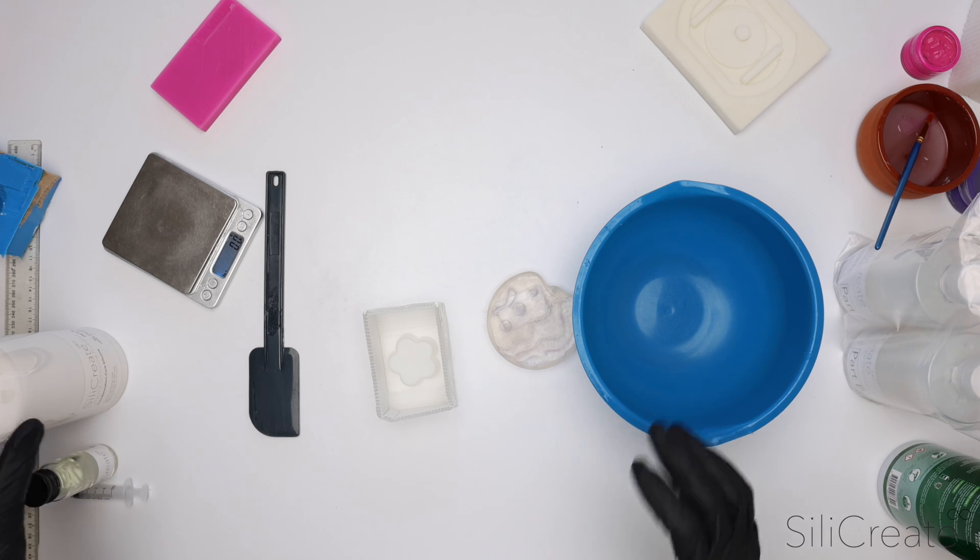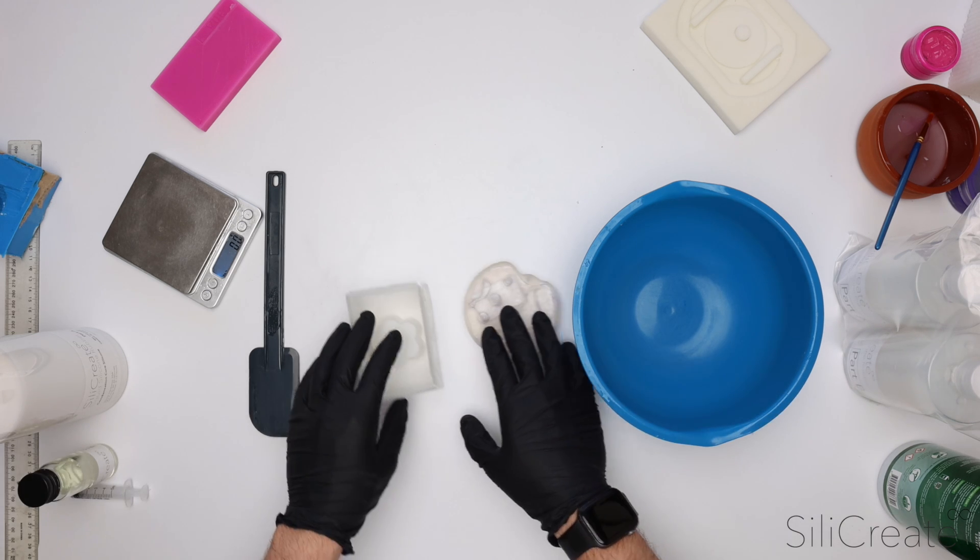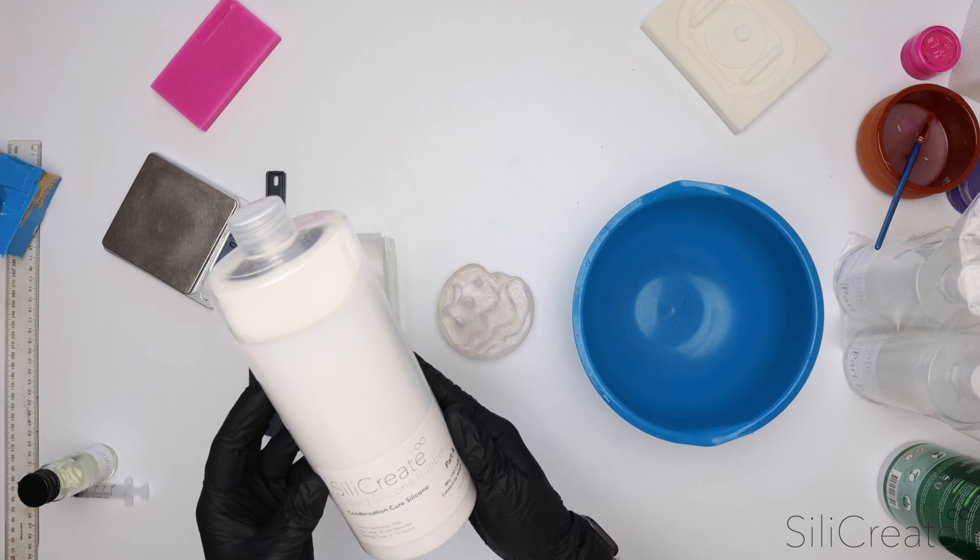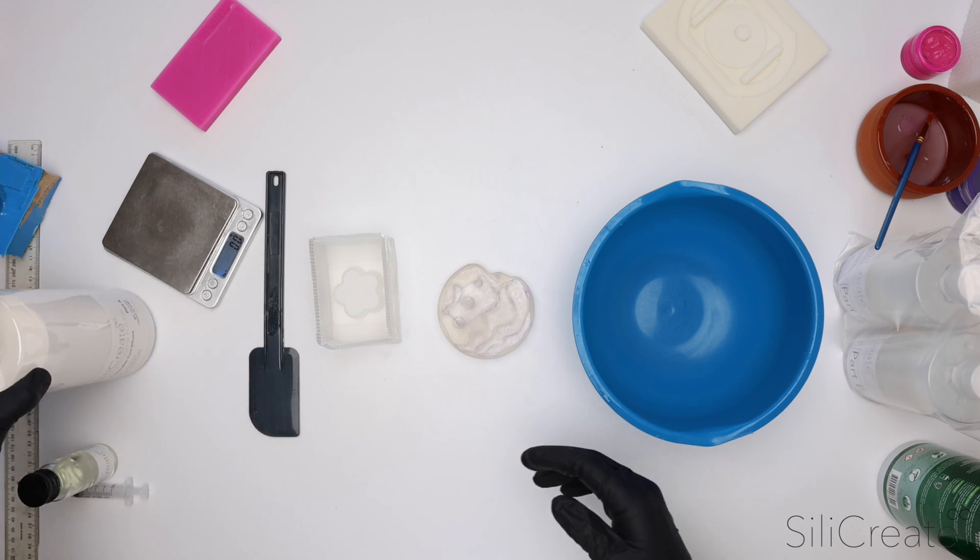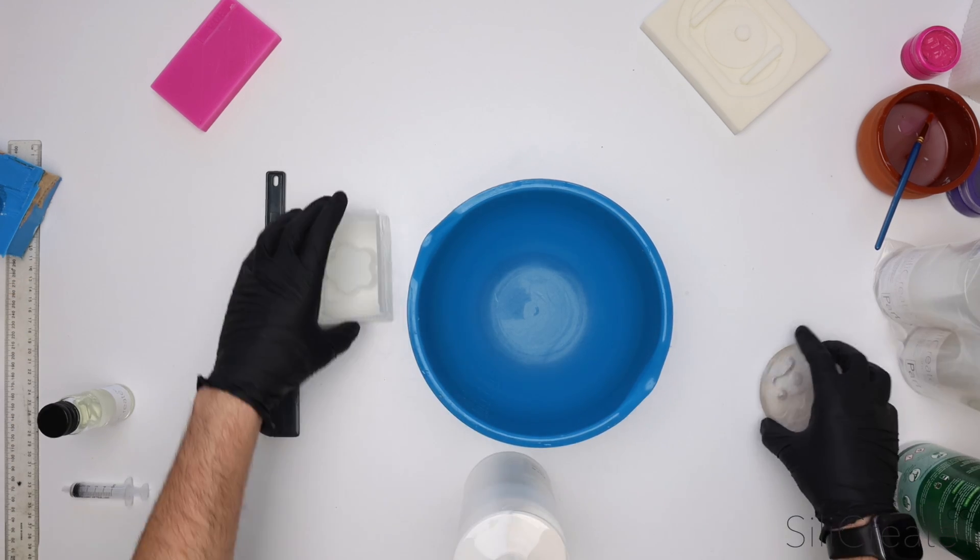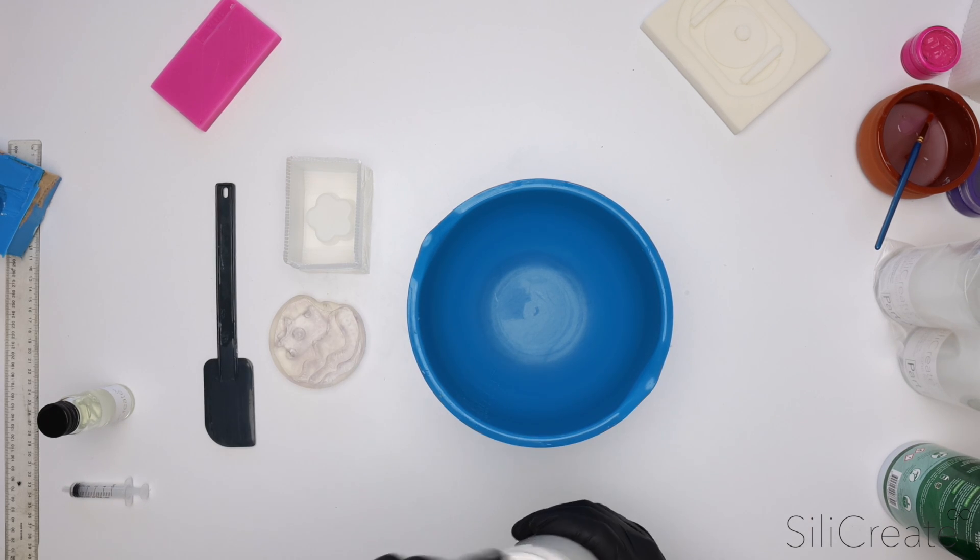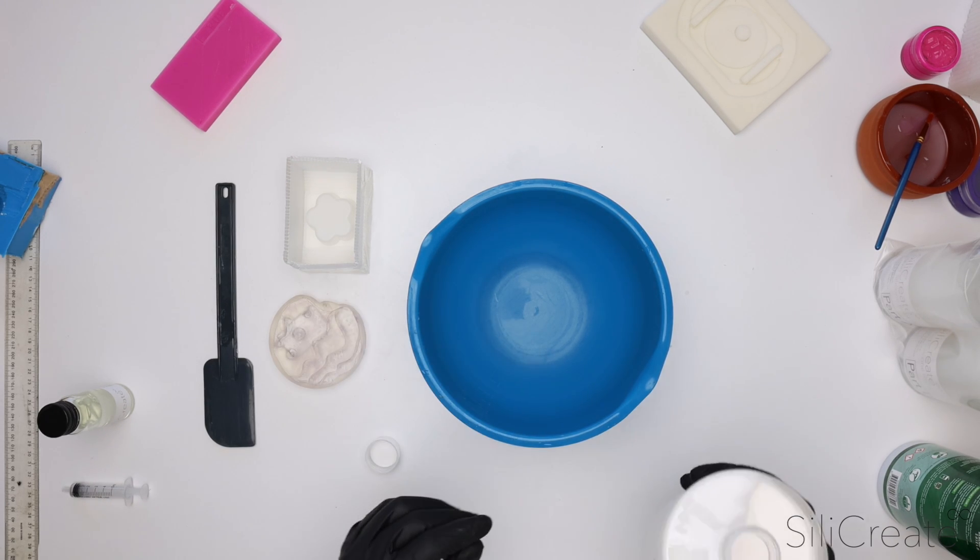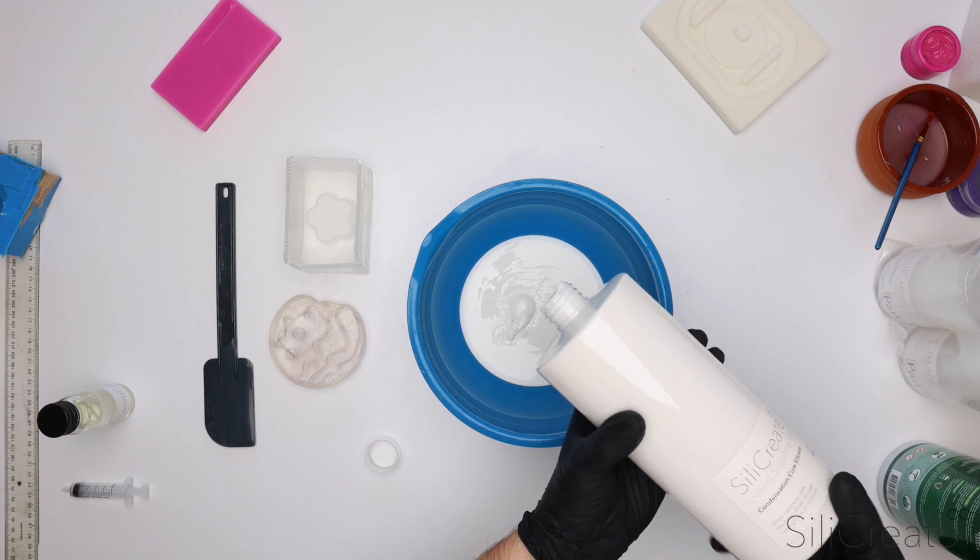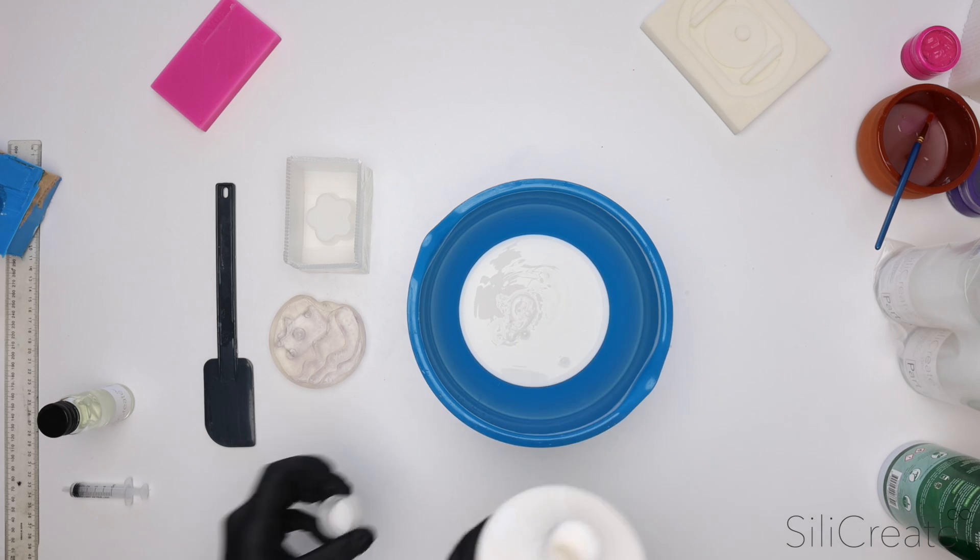In this video, I'll be making a couple of molds with our condensation cure tin cure silicon. I'm just going to do a couple hundred grams for these small test molds. I've got my scales and a bowl set up here. Alright, I've got 201 grams.